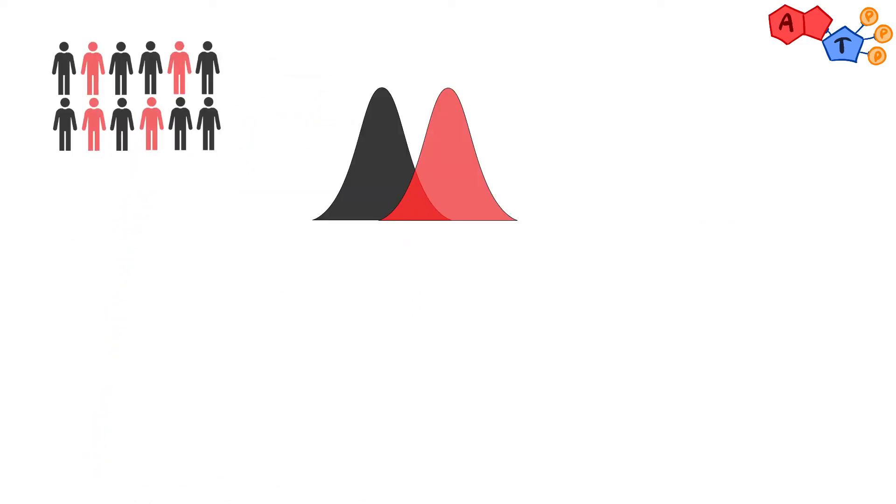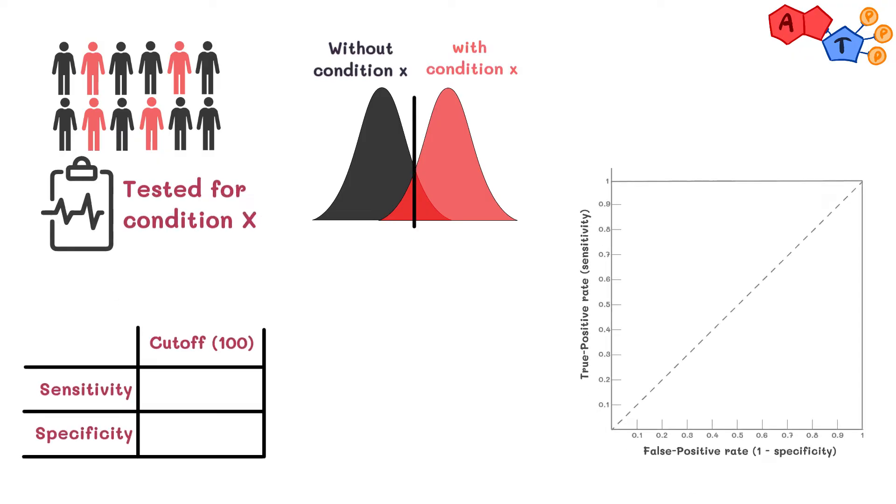For instance, let's take a group of people we tested for condition X with a cutoff of 100 units. Suppose after all the calculations we ended up with a sensitivity of 80% and specificity of 85%.